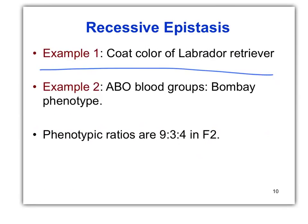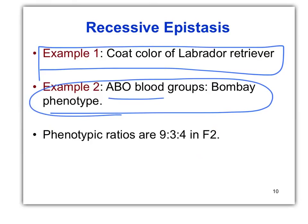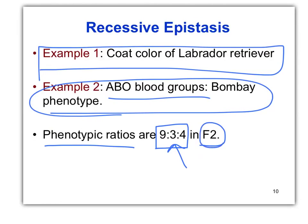For recessive epistasis, we're going to use coat color in Labrador retrievers as our example. We also have the Bombay phenotype in ABO blood groups — you can look that up. The main pattern we're looking for is a phenotypic ratio of 9 to 3 to 4 in the F2. We haven't seen this ratio in any other examples.